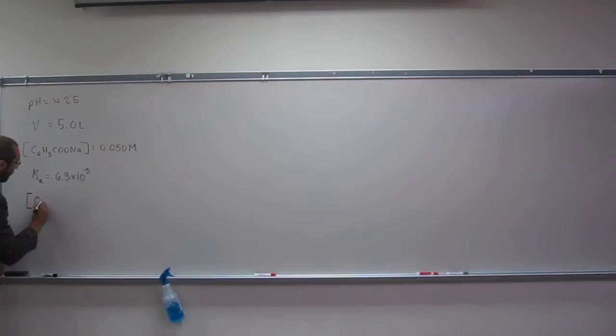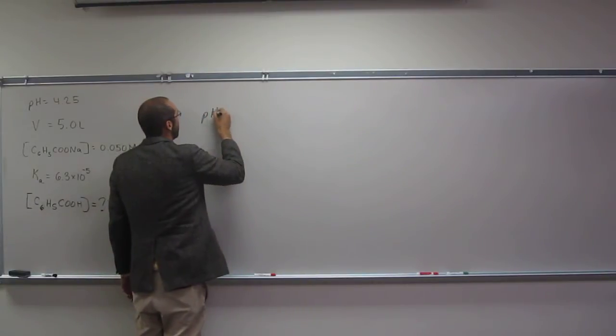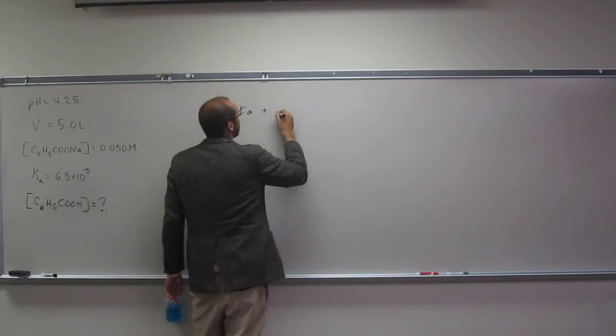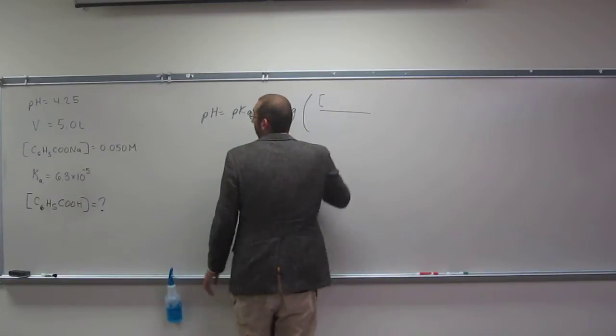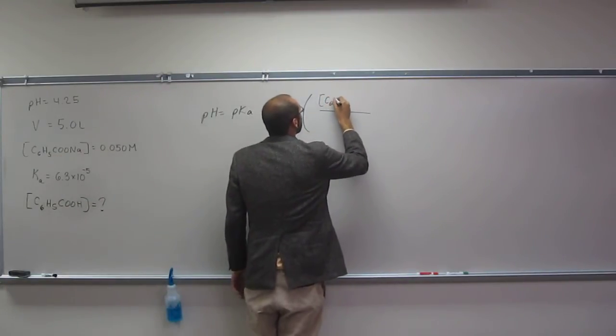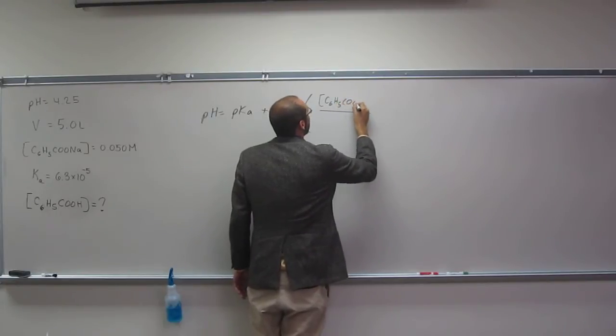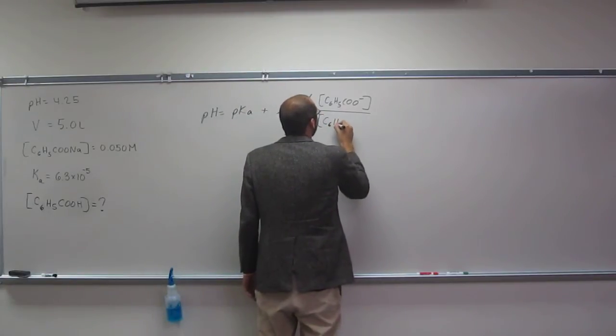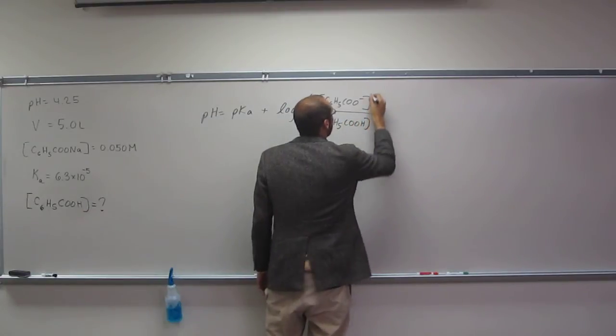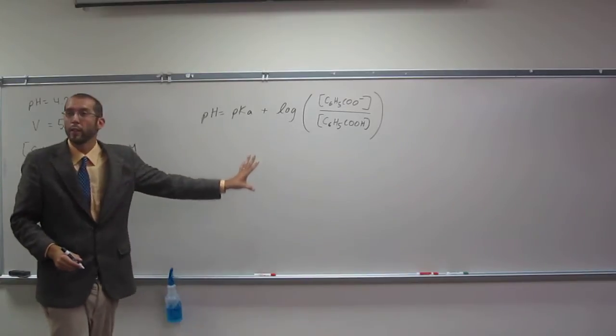So first, we're going to have to figure out what the concentration of C6H5COOH is. You know the Henderson-Hasselbalch equation. So pH equals pKa plus the log of the conjugate base, the benzoate C6H5COO- or Na, over the bottom C6H5COOH. Does everybody understand that's the Henderson-Hasselbalch equation?